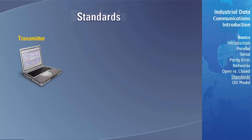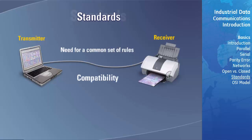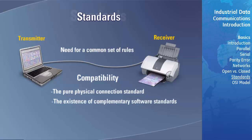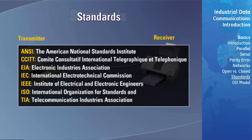One of the most important features of a communication system is the need for a common set of rules so that both the receiver and transmitter can understand each other — this is referred to as compatibility. There are three issues associated with compatibility: the first is the pure physical connection standard; the second is the existence of complementary software standards at the transmitter and receiver used in conjunction with the physical standards; and the third is the conformability of the physical connection and software to the Open System Interconnect model, or OSI model. There are seven worldwide organizations involved in drawing up standards or recommendations affecting data communications.